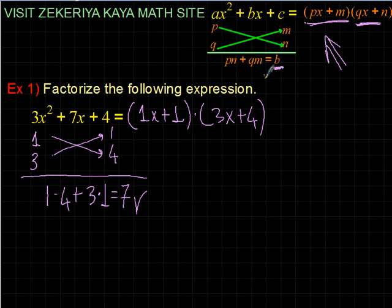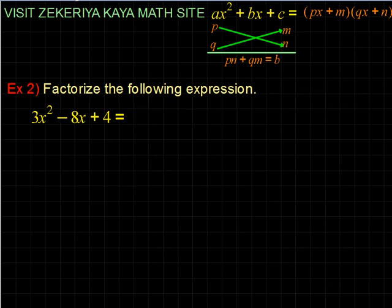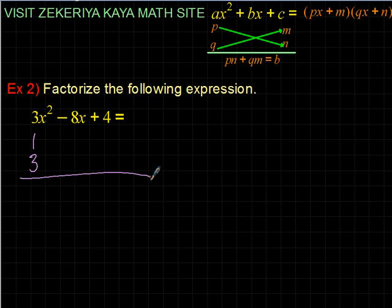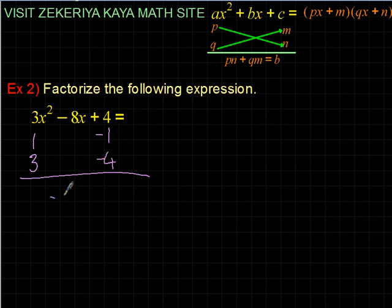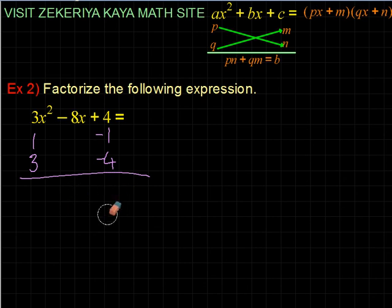Let's see the second example. I only changed the middle term — I made it negative. For A we have only one choice: one and three. I need to arrange so that when I cross-multiply and add, the result is negative. If I make both numbers positive the result will be positive. If I change both to negative: one times minus four is minus four, three times minus one is minus three, giving minus seven — but minus seven doesn't satisfy negative eight.